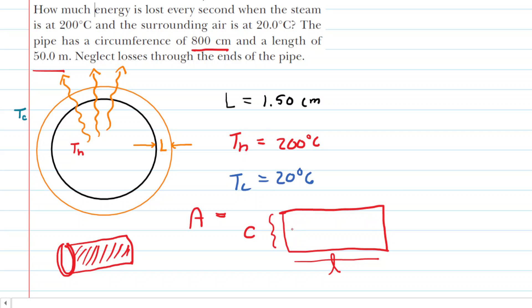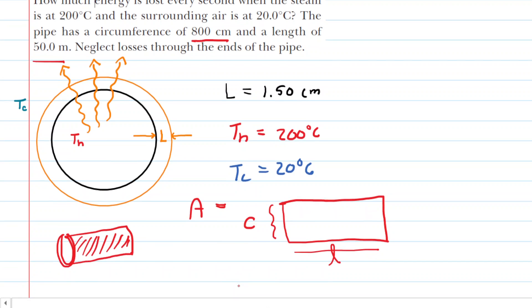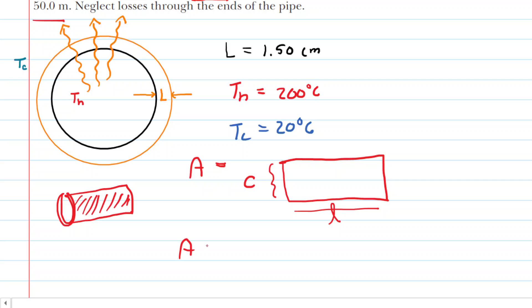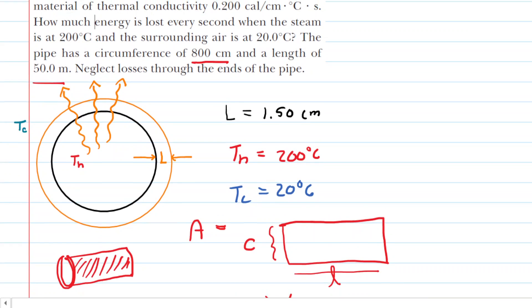We know the area of a rectangle is just the length times the width, or in this case, the length times the circumference. We're going to calculate the area by taking the circumference, which was 800 centimeters. Divide that by 100 to get it into meters, so 8 meters multiplied by the length of the pipe, which was 50 meters, and that area turns out to be 400 meters squared.